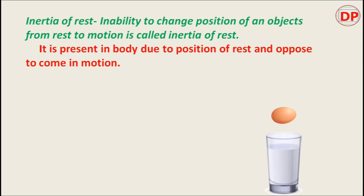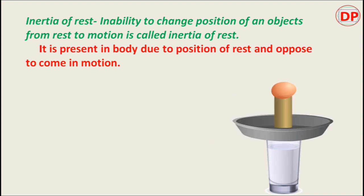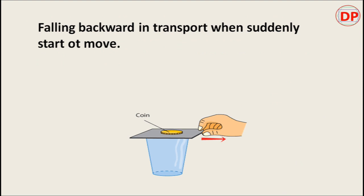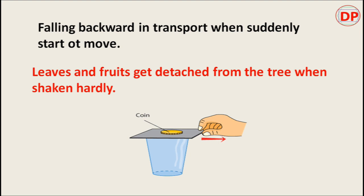Inertia of rest causes objects to be unable to change position from rest to motion. Examples include: falling backward in transport when it suddenly starts to move, and leaves and fruits getting detached from a tree when shaken hard. In these examples, objects are at rest and when they suddenly need to come into motion, they oppose it and fall down.